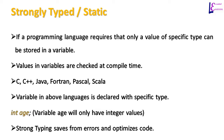Advantages of strongly typed languages are that the program is saved from errors and declaring a type for a variable optimizes the code. Some books define statically typed languages as those in which conversion from one data type to another is not allowed implicitly — you have to tell the compiler to change the value into a specific type. That is why in strongly typed languages, direct conversion from one type to another is not allowed. Hence, strongly typed and statically typed languages are the same.